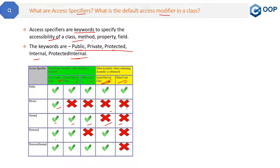Then we have protected. Protected is accessible in the same class and also in the child or derived class. It will not be accessible anywhere else. Even if the derived class is in another assembly, this protected method will still be accessible there — that is not a problem. But otherwise it is not accessible outside class hierarchies.